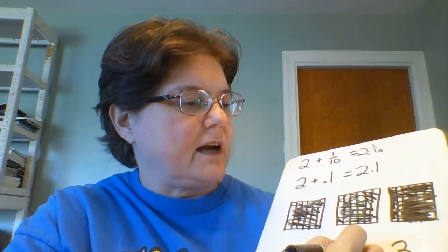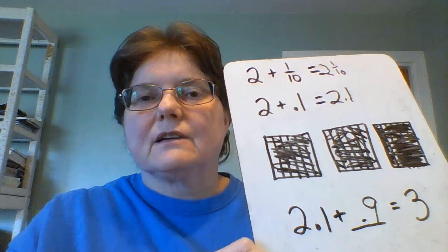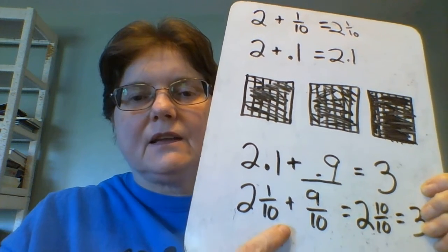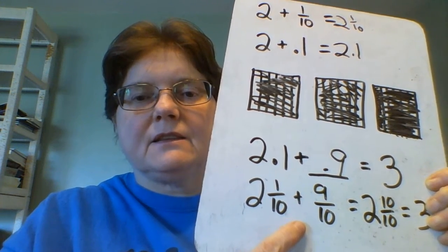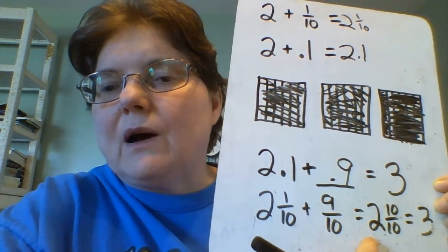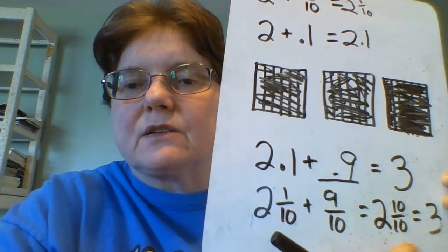2 and 1 tenth plus 9 tenths equals 3. We can also write it as a fraction. We have 2 and 1 tenth plus 9 tenths equals 2 and 10 tenths. And we know that 10 tenths is 1. So it's 2 and 1 which makes 3.